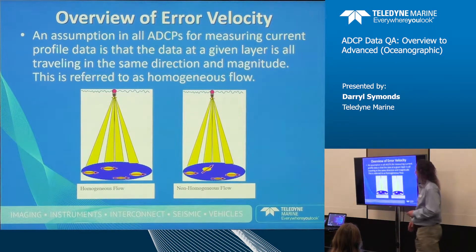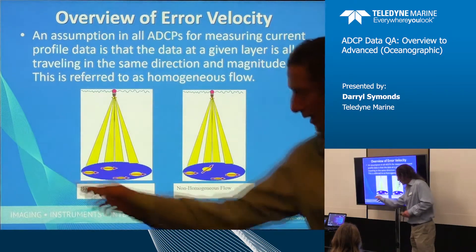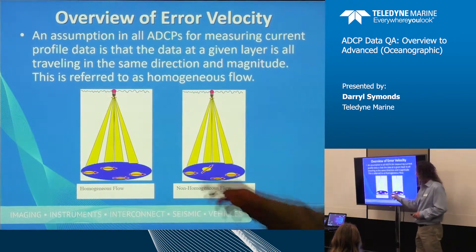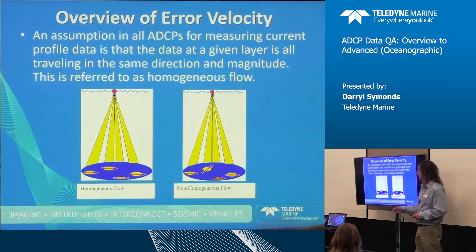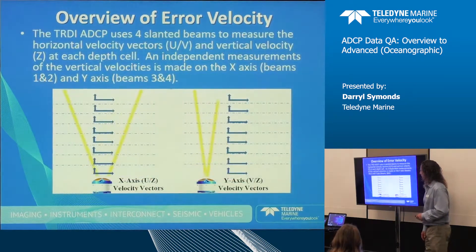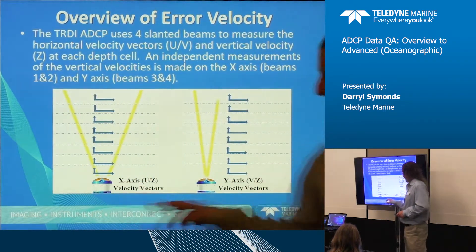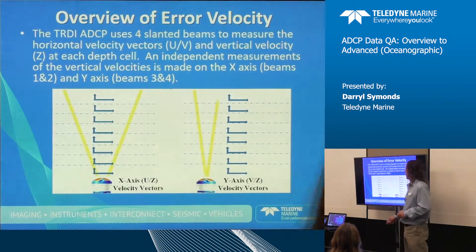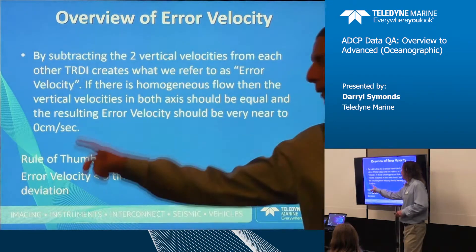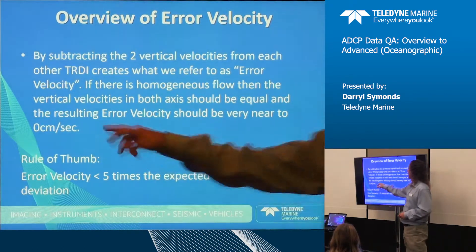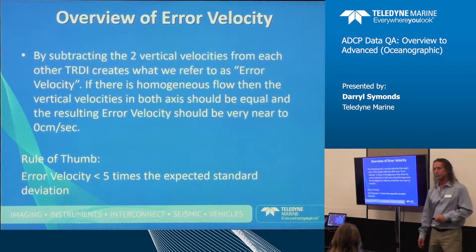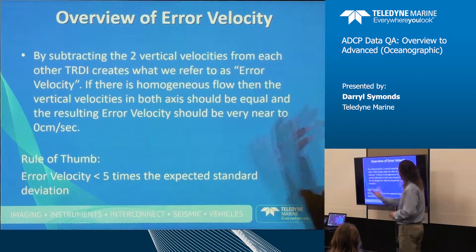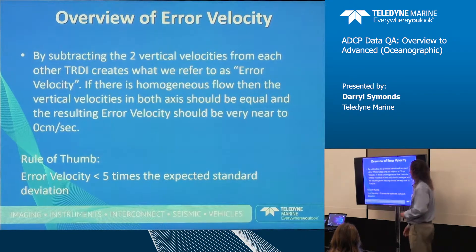Let's talk about error velocity — I explained it yesterday but I'll go over it again. In homogeneous flow, all four beams are seeing the same velocity. In non-homogeneous flow, the error velocity will be large; in homogeneous flow it should be near zero. On each axis we get horizontal and vertical combined; we compare the two vertical estimates, and any residual is called error velocity. Error velocity should be less than five times the expected standard deviation — so in an average data file or single ping it should never be more than five times that.